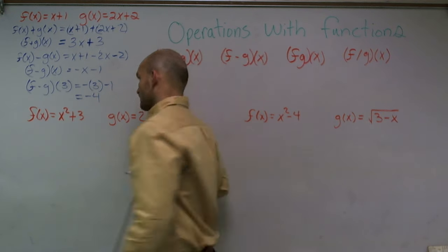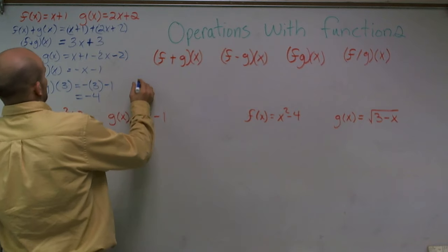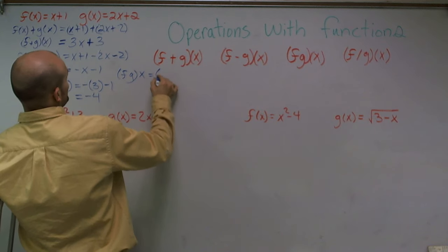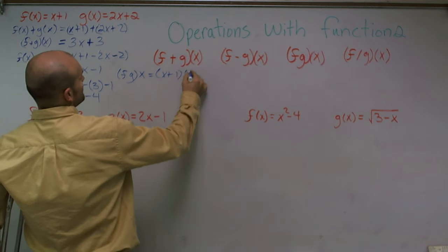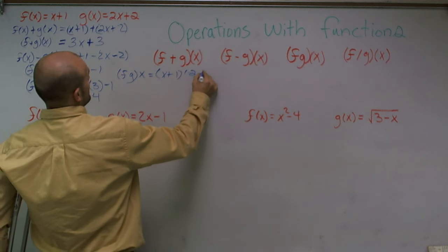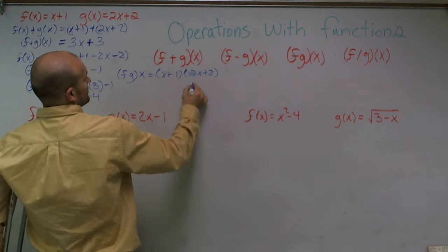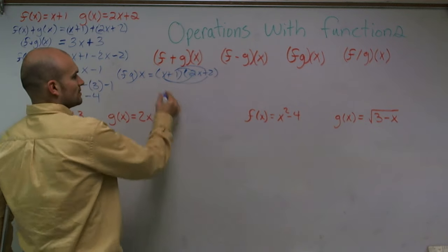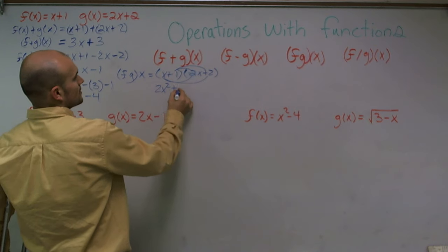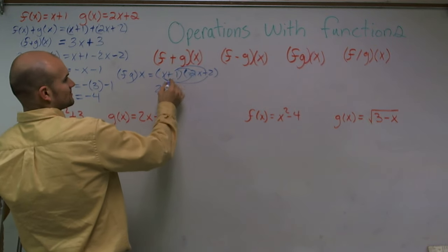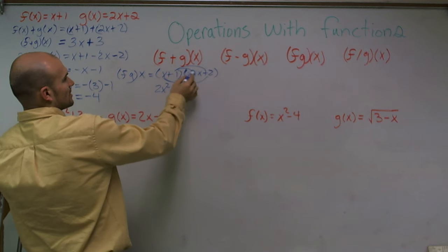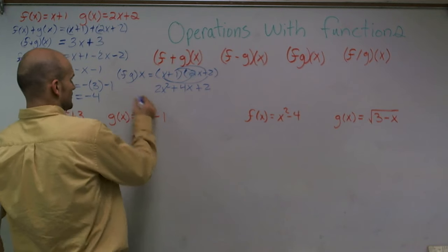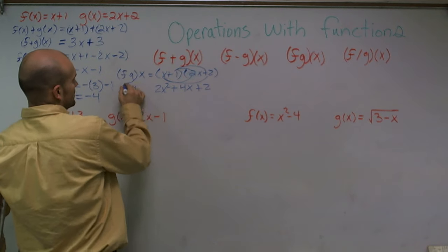Now let's do multiplication. You have a binomial times another binomial, so use the FOIL method. That gives us 2x squared, then x times 2 is 2x, plus 2x times 1 is 4x, plus 2. That is the result of f times g of x.